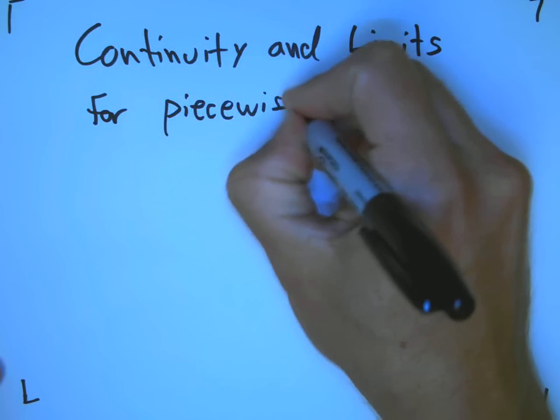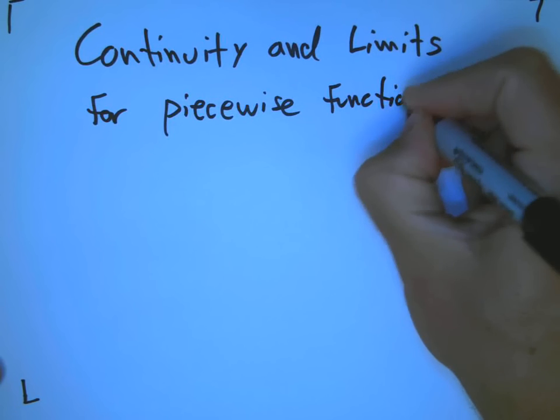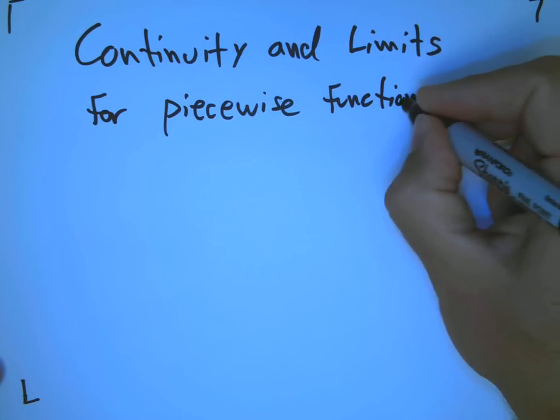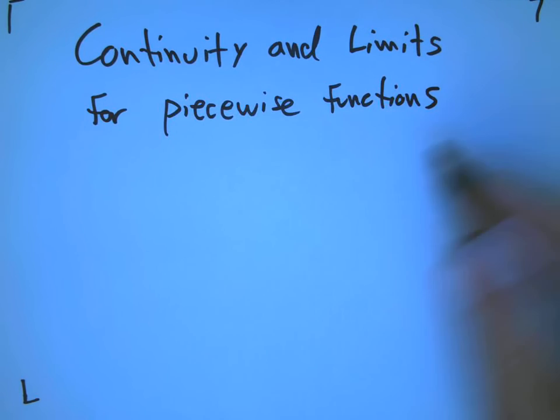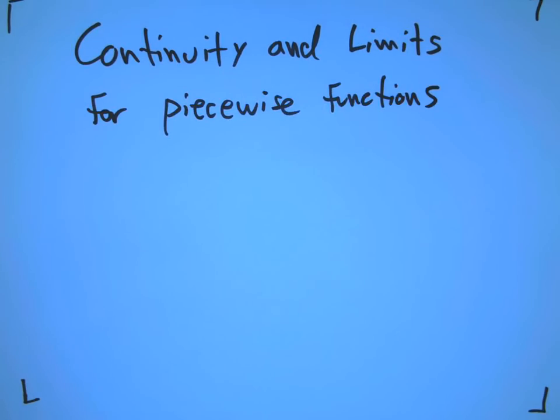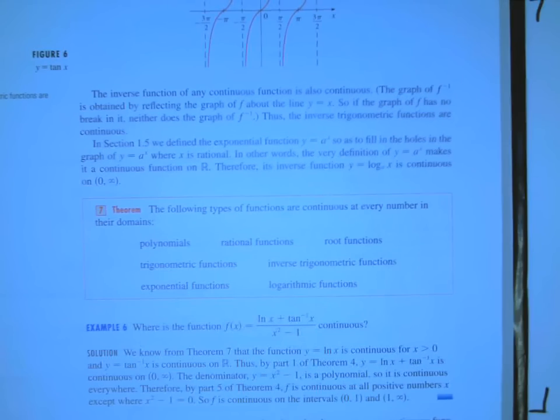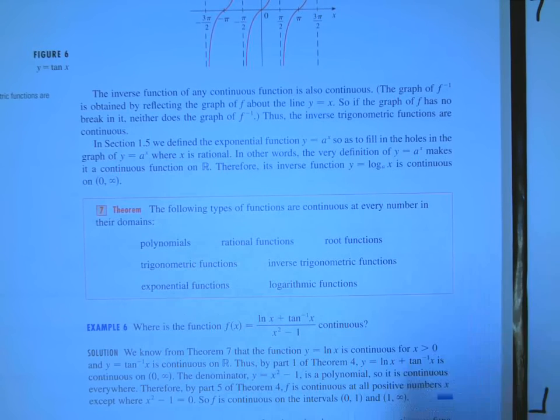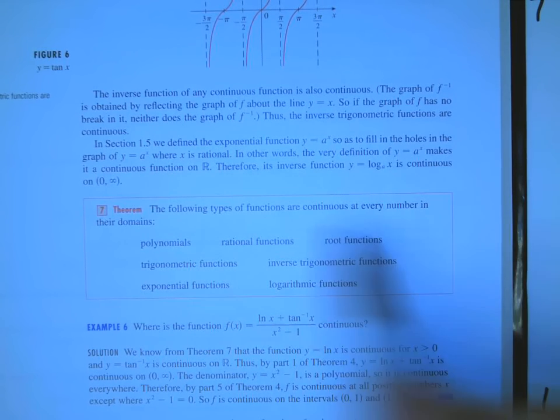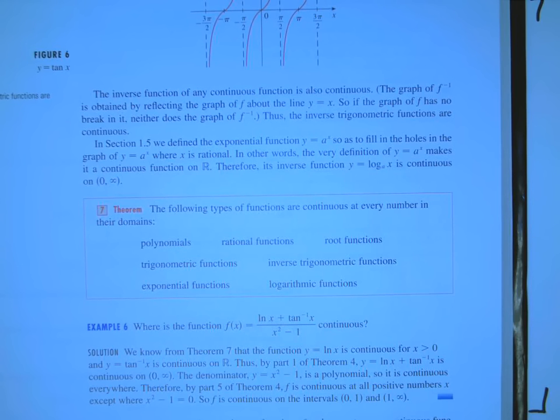It's really piecewise functions where continuity is usually difficult to figure out. One of the things in the book, one of the most important theorems, and you need to be following along in your book with this video, or else you're not going to be able to figure out what I'm talking about. On page 129, there's a nice theorem. The following types of functions are continuous at every number in their domains. Basically, every kind of function we're familiar with, except piecewise defined functions.